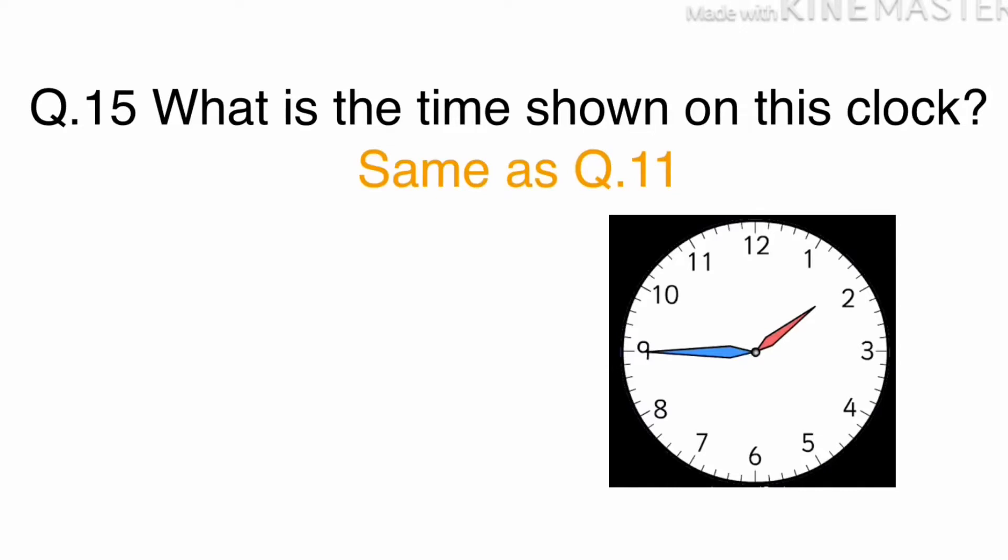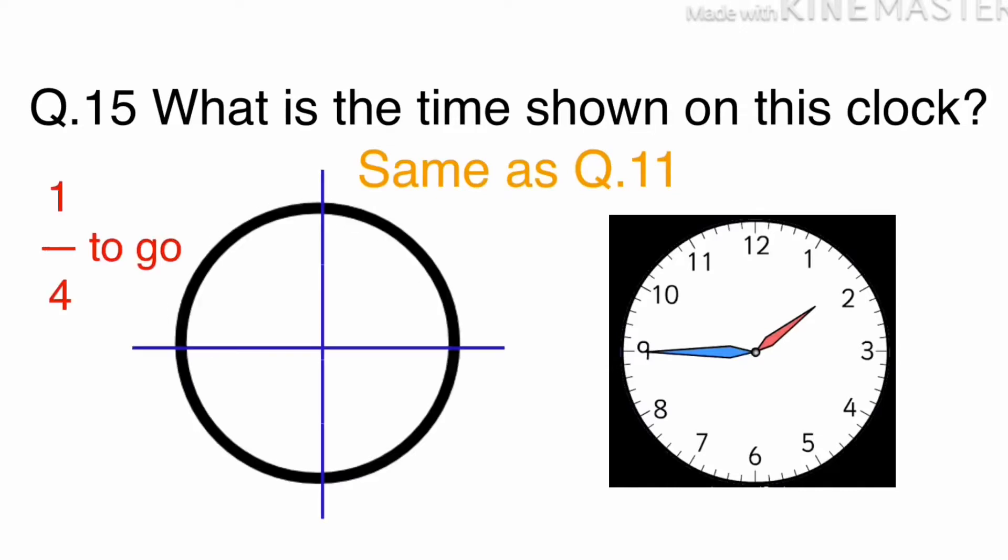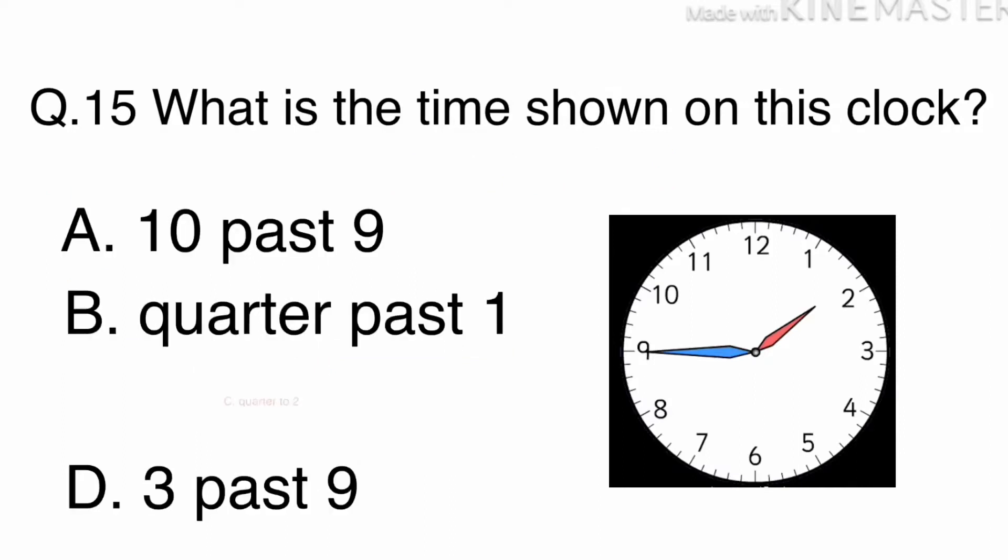Question 15 is the same as question 11. The minute hand has gone three quarters of the hourly circuit and has only one quarter to go. The time is quarter to 2, 1:45. The answer is C, Quarter to 2.